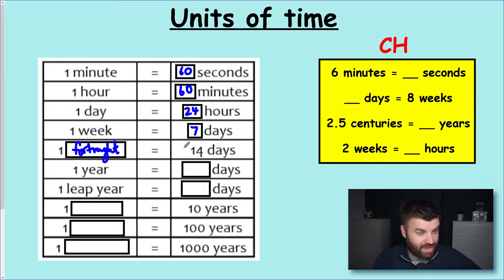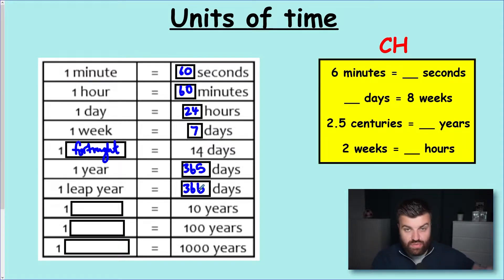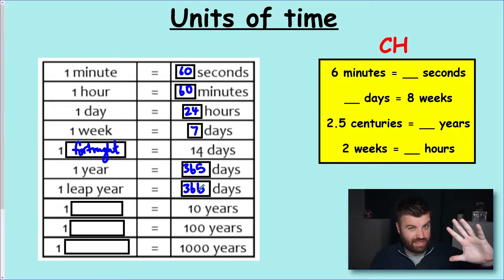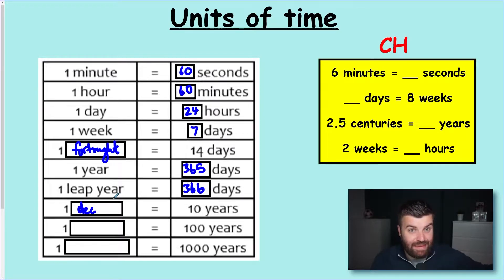One year equals 365 days, but of course you may have heard of a leap year — that's when we get an extra day, so that's 366 days. The reason behind that is that we're actually a quarter of a day off every single time — something you might want to research if you're into science. But we're here for maths, so let's carry on. Ten years is one decade — 'dec' means 10, so decade means 10 years. One hundred years is a century.